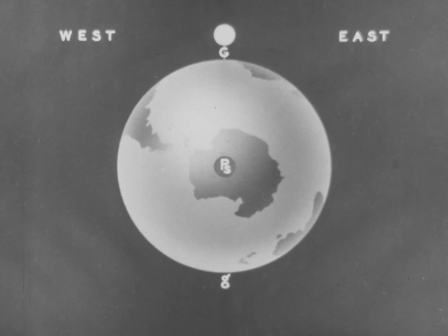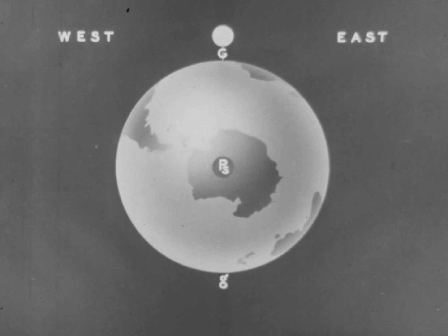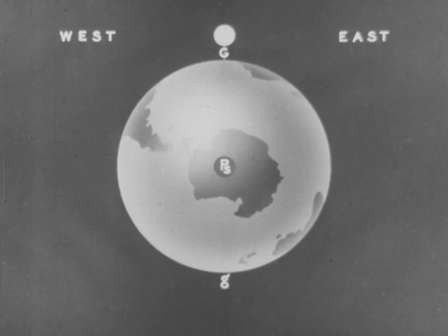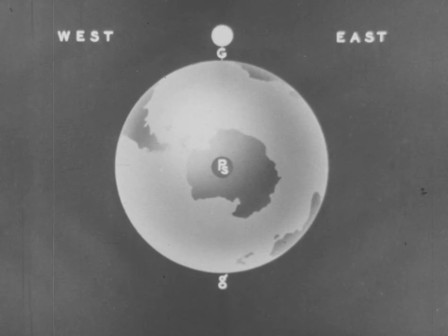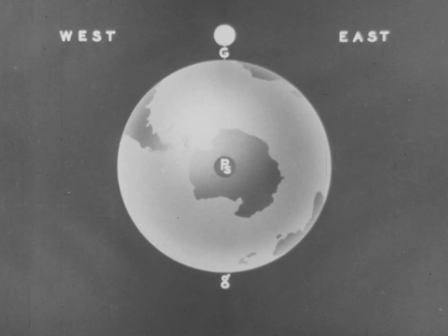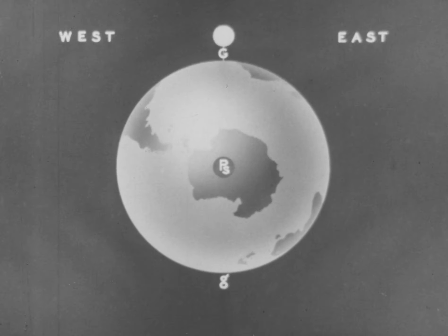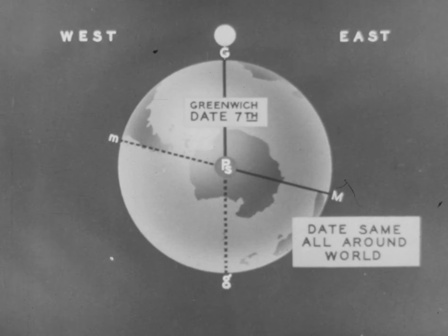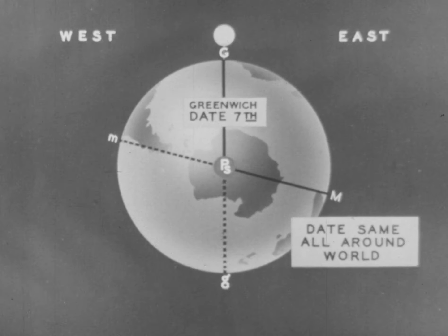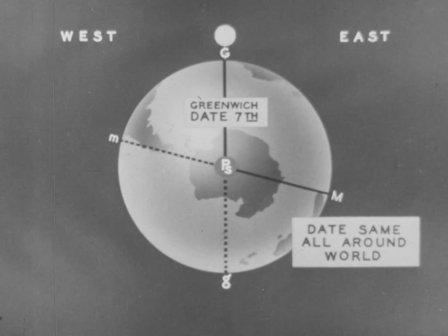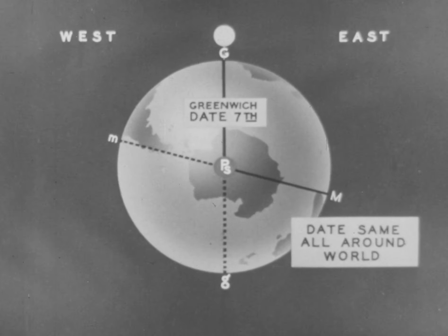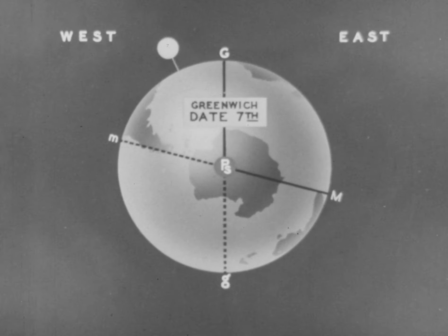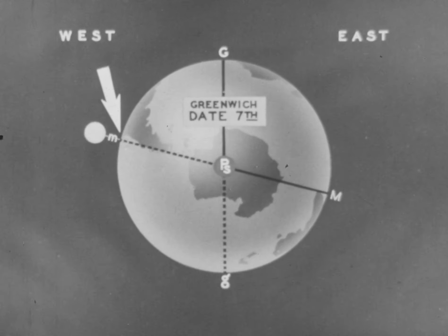To illustrate this same matter of dates in another way, let us view the earth from the South Pole. Commencing with the sun on the Greenwich Meridian, we know that it is noon there and the date is the same all around the earth. We will assume that the date is the 7th. As the sun moves around the earth, it transits the lower branch of the meridian.